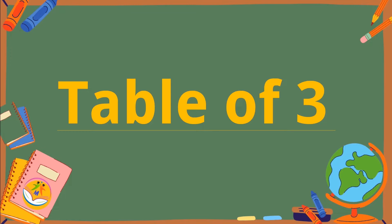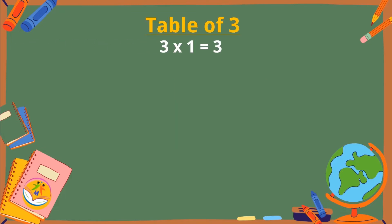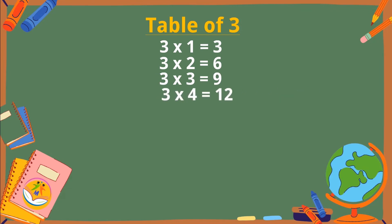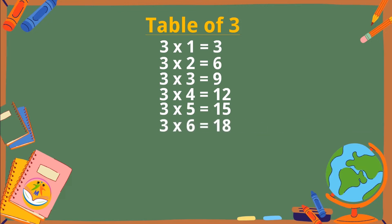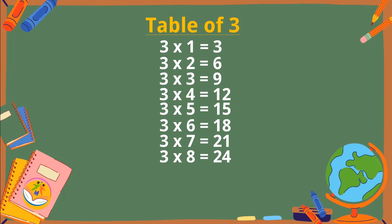Table of 3. 3×1 is 3, 3×2 is 6, 3×3 is 9, 3×4 is 12, 3×5 is 15, 3×6 is 18, 3×7 is 21, 3×8 is 24, 3×9 is 27, 3×10 is 30.